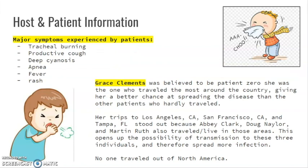Next is host and patient information. The patient experienced tracheal burning, productive cough, deep cyanosis, apnea, fever, and rash. Patient zero was thought to be Grace Clements because she was the one who traveled the most around the country, giving her a better chance to spread the disease. Her trips to Los Angeles, California; San Francisco, California; and Tampa, Florida stood out because Abby Clark, Doug Naylor, and Martin Rush also traveled or lived in those areas. These opened up the possibility of transmission, and therefore the spread was more effective. No one traveled outside of North America.